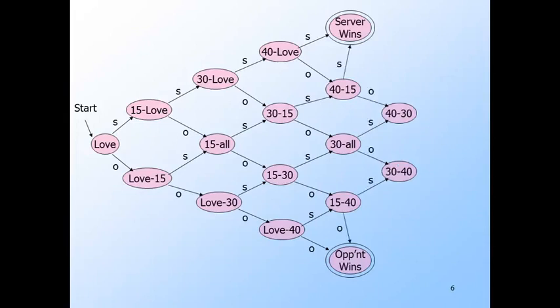From the forty-fifteen state, if the server wins the point, we go to the server-won state. But if the opponent wins the point, we go to a new state called forty-thirty. A similar thing happens from fifteen-forty. And from thirty-all, we can go to either the forty-thirty or the thirty-forty state.